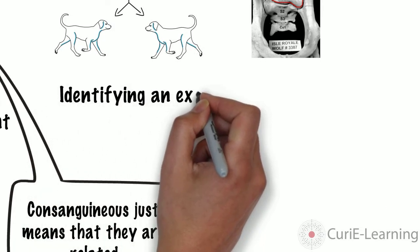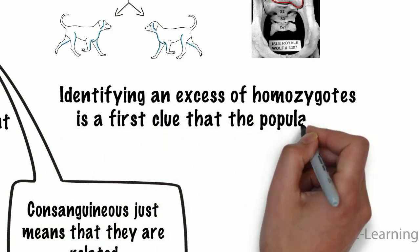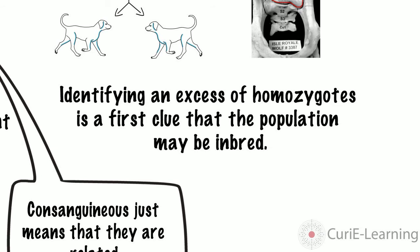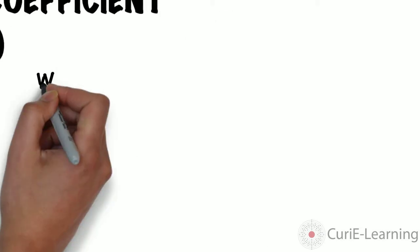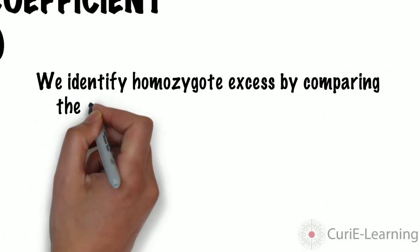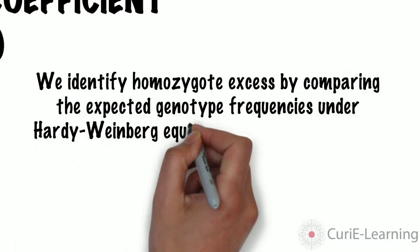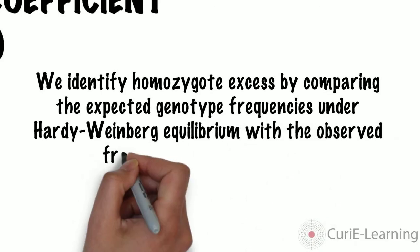Identifying an excess of homozygotes is a first clue that a population may be inbred. We identify homozygote excess by comparing the expected genotype frequencies under Hardy-Weinberg equilibrium with the observed frequencies in the population.